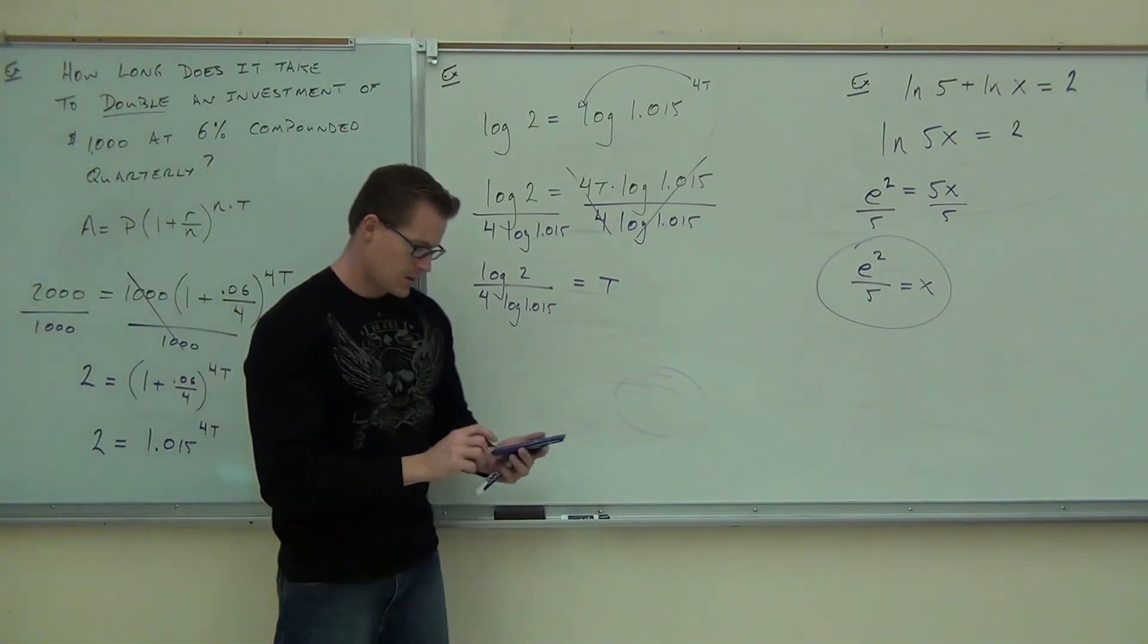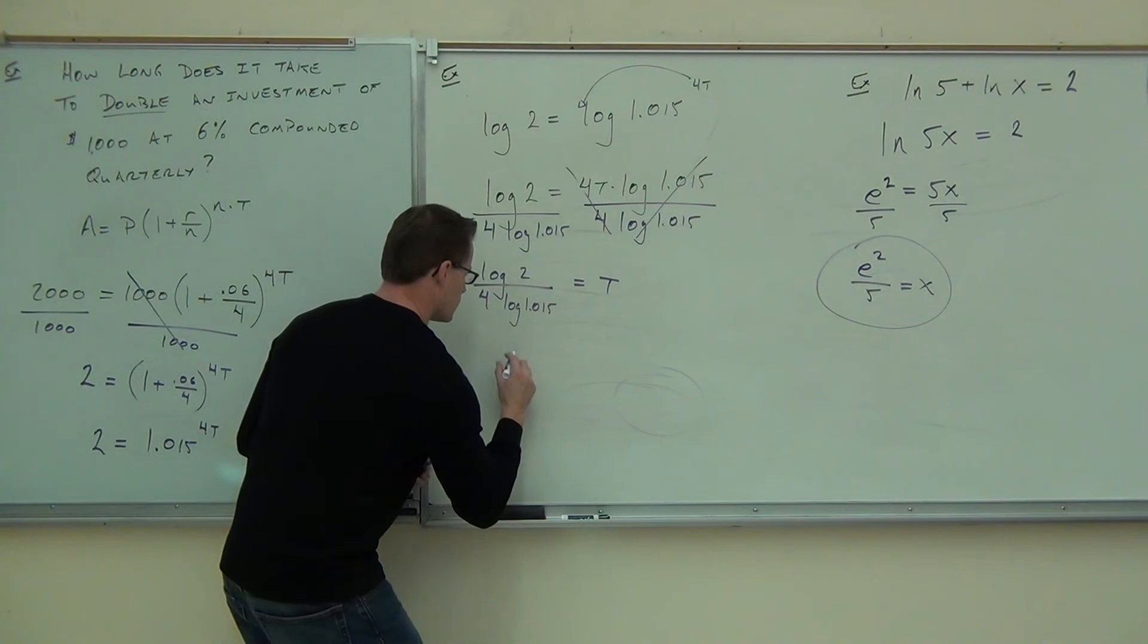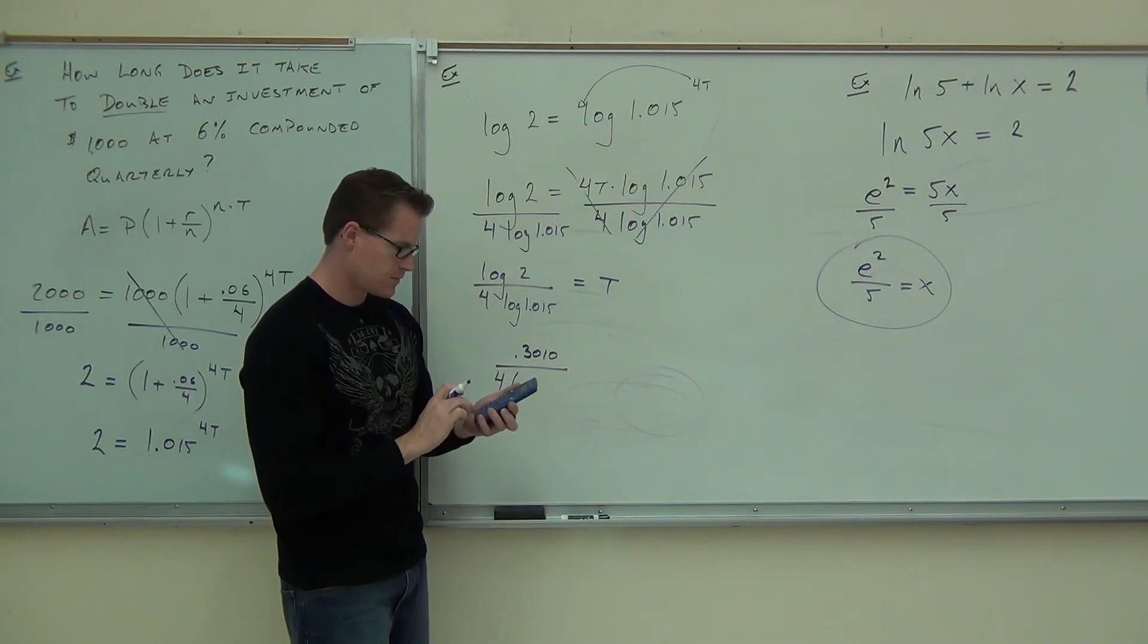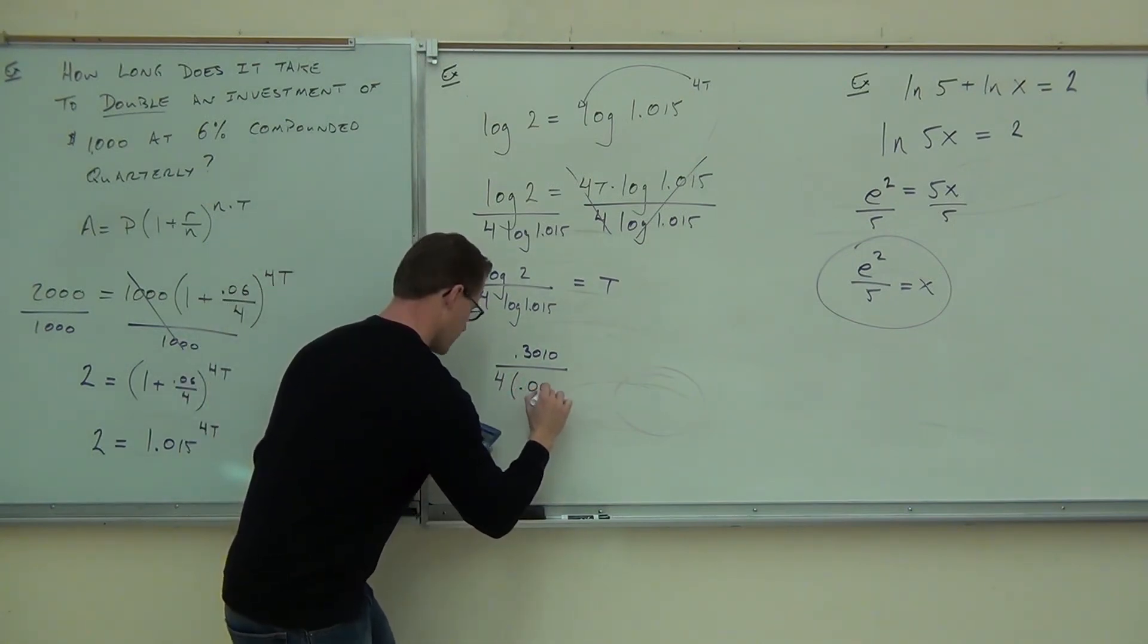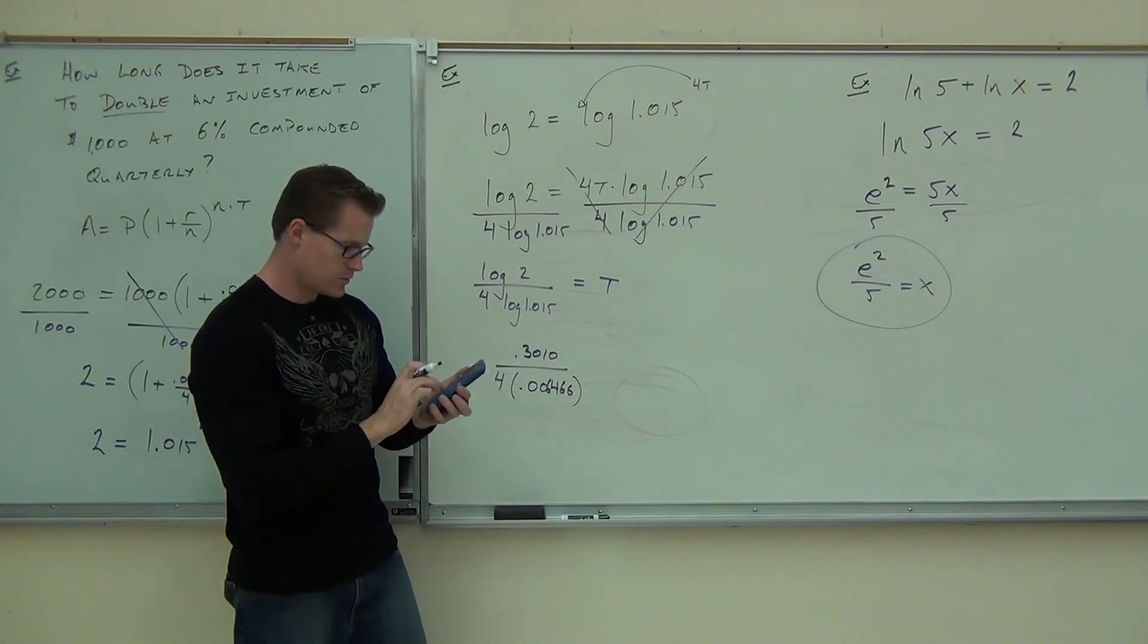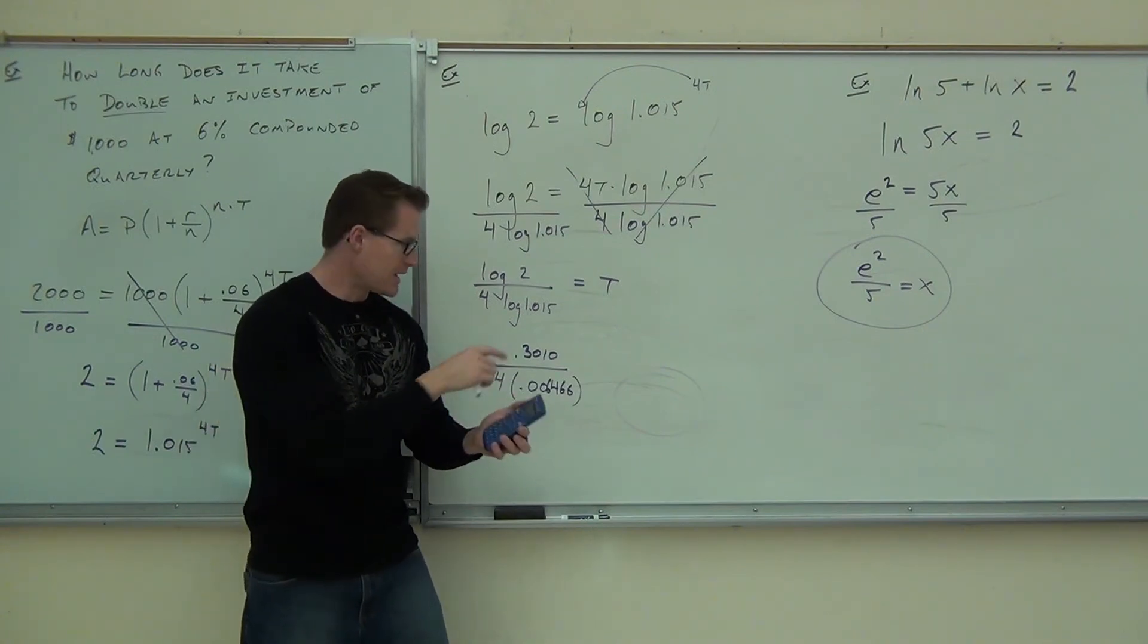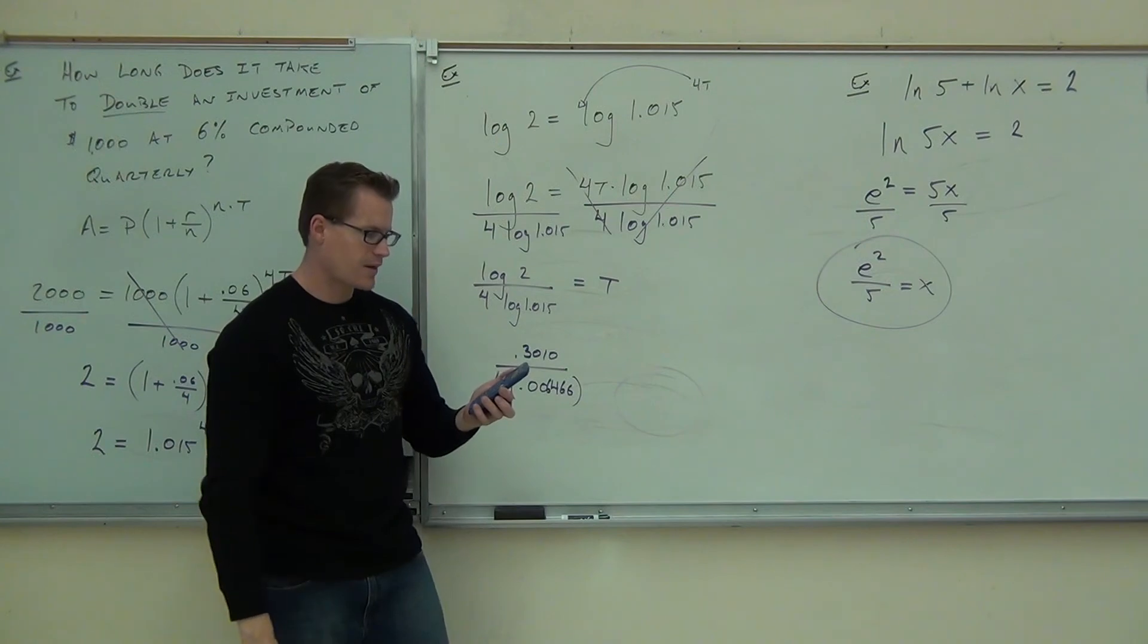I'll do the math for you right now. If you do log of two, that gives you approximately point three zero one zero. If you do log of one point zero one five, it's going to give you point zero zero six four six six. Now, unfortunately, you shouldn't really round those numbers because you're going to be way off on your number of years if you do. Because you're dealing with really small numbers here. So, in order to do this the right way, I'm going to do log of two and press enter. Then I'm going to divide by four and press enter. That's this part right here. Whatever number you get, you divide again by log. So, divide again. Remember, this is divide and divide. Divide again by log of one point zero one five.